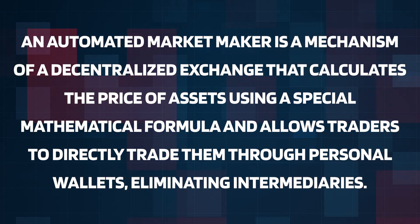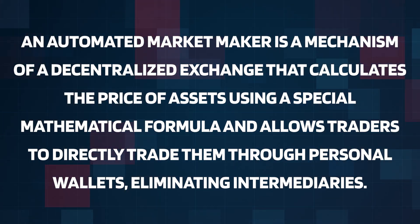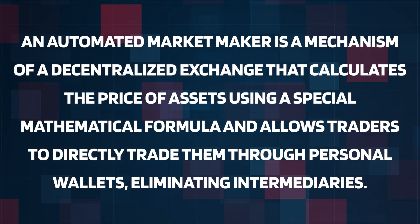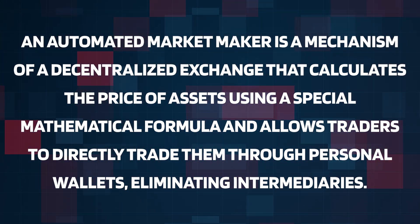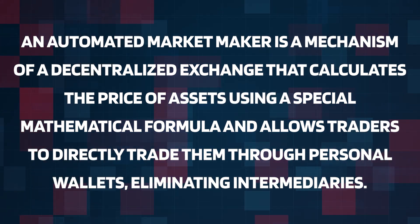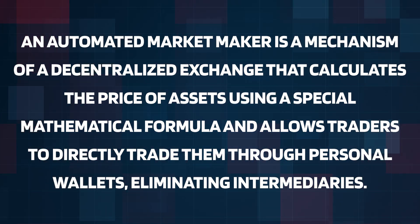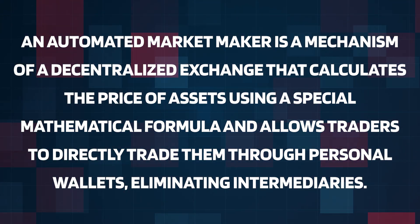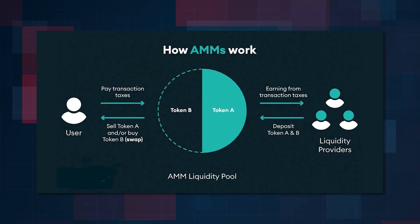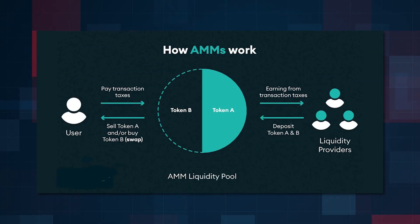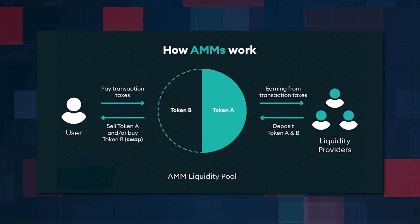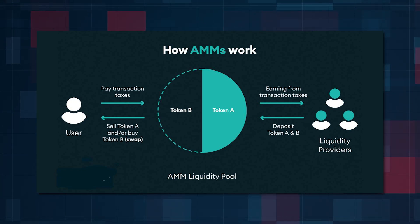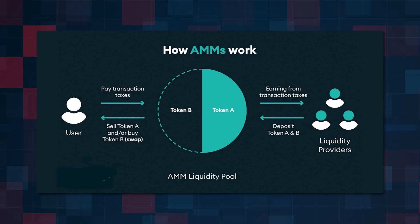An automated market maker is a mechanism of decentralized exchange that calculates the price of assets using a special mathematical formula and allows traders to directly trade them from personal wallets, eliminating intermediaries. Unlike order book exchanges, where buy and sell requests accumulate, users interact directly with smart contracts, which automatically create the market.